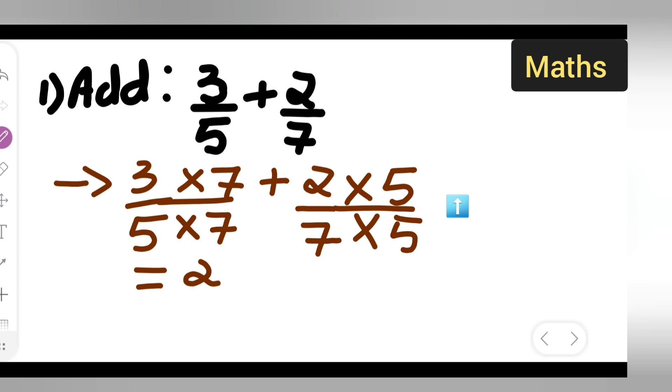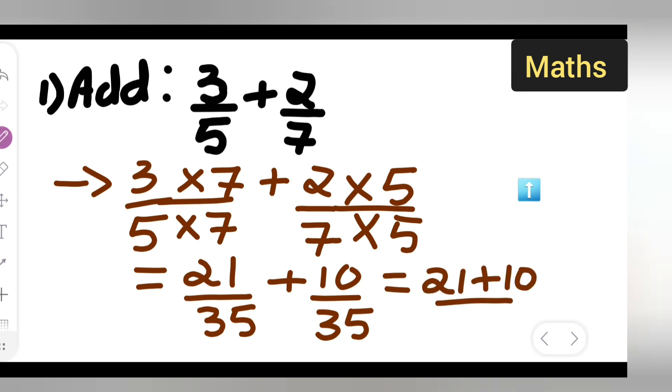Plus 2 times 5 are 10 upon 35. So 3 sevens are 21, 5 sevens are 35, plus 2 fives are 10, 7 fives are 35. So how are you going to write this? 21 plus 10 upon 35.